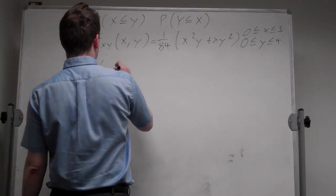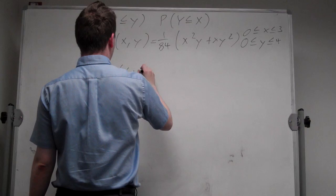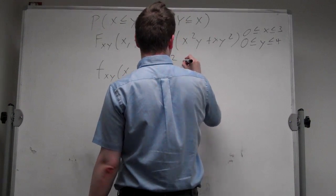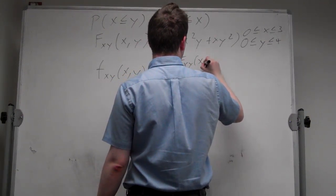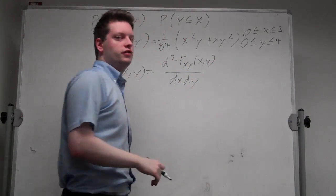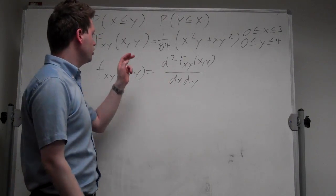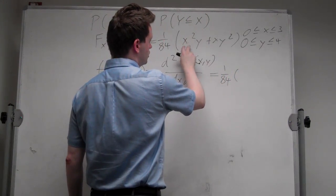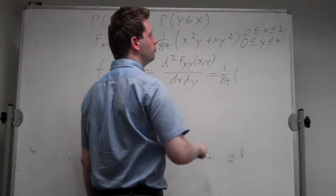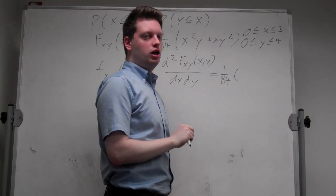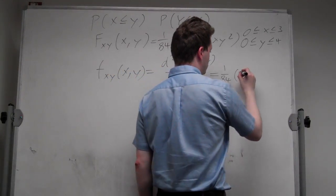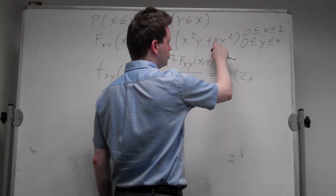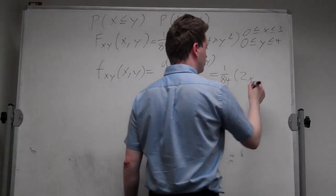To get the probability density function, so f(x,y) with a small letter instead of the capital letter, we need to take the second derivative of this function. If we do so, we get 1 over 84 times, since it's the sum of two terms, we can just take the second derivative of both of them. So if we take derivative with respect to y, we're just left with x squared, so derivative with respect to x is just 2x. Similarly for here, if we take derivative with respect to y first, we get 2xy, and then derivative with respect to x, we get plus 2y.